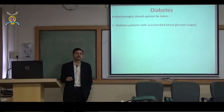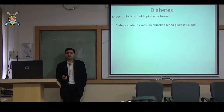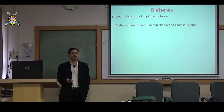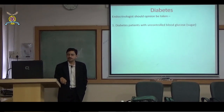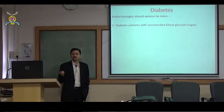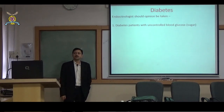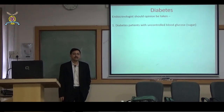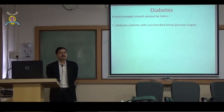There was a lady on basal-bolus insulin — long-acting plus three short-acting — along with four anti-diabetic medications. Her fasting blood sugar was 250 and post-prandial around 400; HbA1c was above 10–12% and not getting controlled. She was referred to me, and in such cases we take a detailed history to understand the actual problem. This patient had an issue with her insulin injection technique.